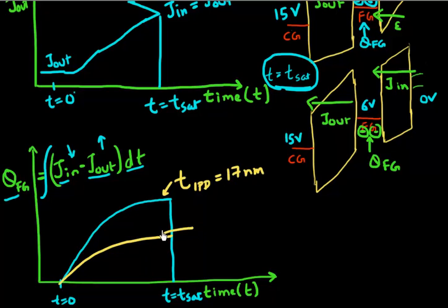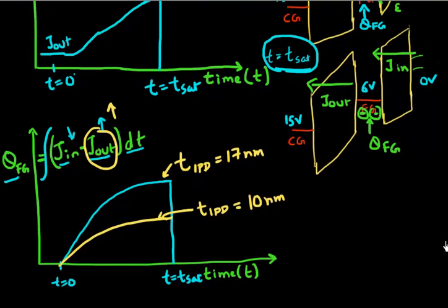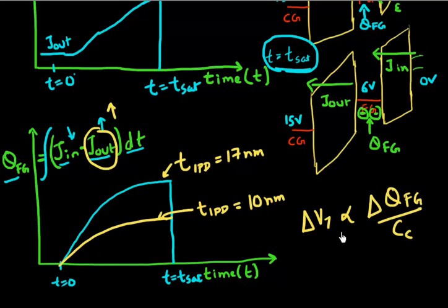If I had interpoly dielectric thickness of let's say only 10 nanometer, what would happen is I'll get a much higher J out. So this saturation would occur at a much smaller level and I'll get a much lower buildup of my charge. And since my charge is directly related to my change in threshold voltage by this simple formula, I'll get a much lower shift in threshold voltage. So to warrant a large change in threshold voltage with programming, we want to keep our tunnel oxide thickness thin but we want to keep our interpoly dielectric thicker.